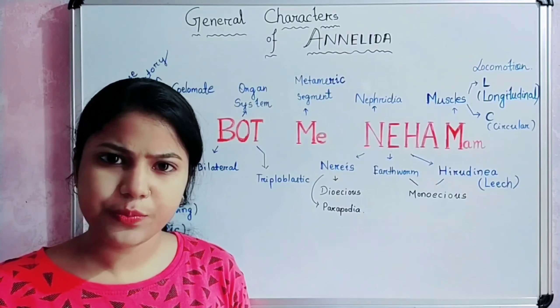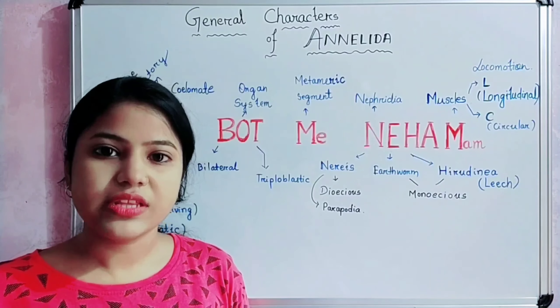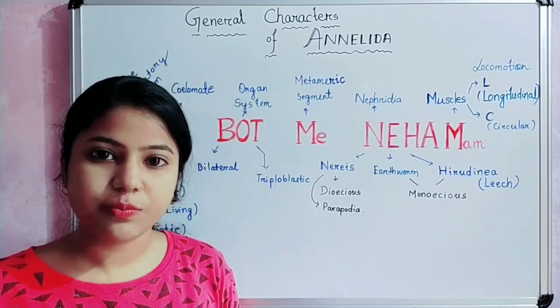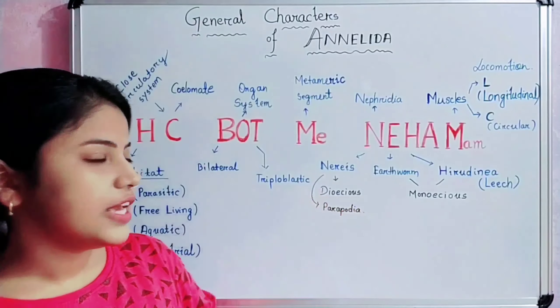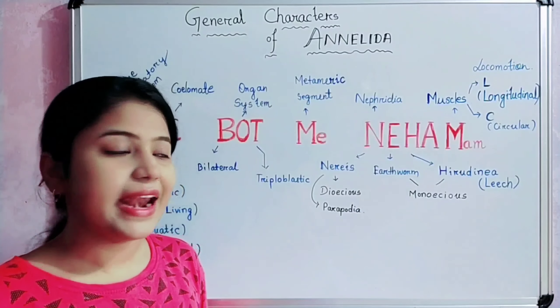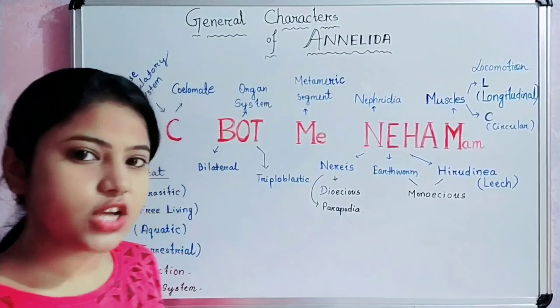As I told you in the previous video, I will start your Paper 3 of Semester 2. This is Paper 3 and the first unit is Annelida. Before I start, I want to tell you that with this short trick, you will remember all the characters of Annelida. The short trick is: 'By class boat may neha man.' Remember this.